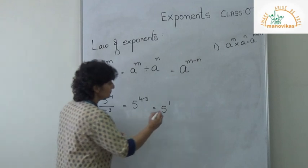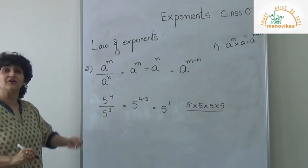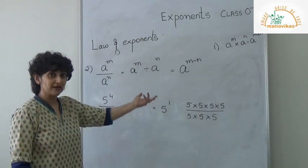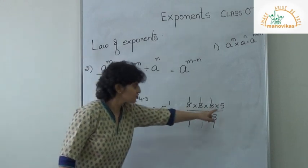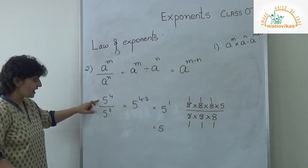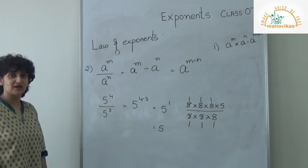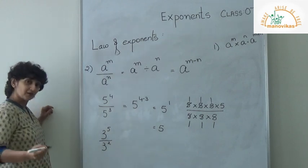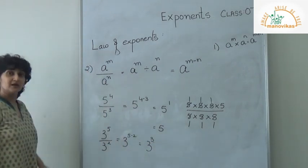5 to the power 4 means 5 into 5 into 5 into 5, and 5 cube is 5 into 5 into 5. When you reduce, three 5s cancel, and you're left with just 5 — which is exactly 5 to the power 1. So anytime you have the same base with different exponents and divide, subtract the exponents. Like 3 to the power 5 divided by 3 squared gives 3 to the power 5 minus 2, which is 3 cube.